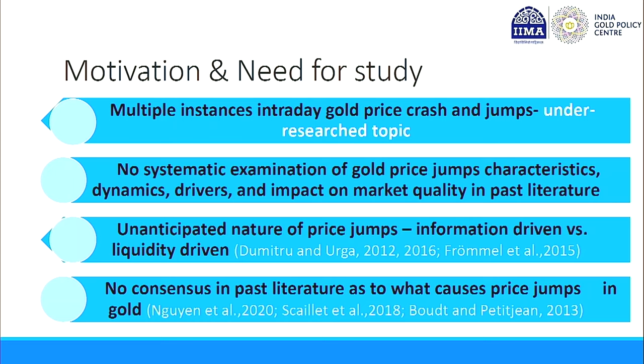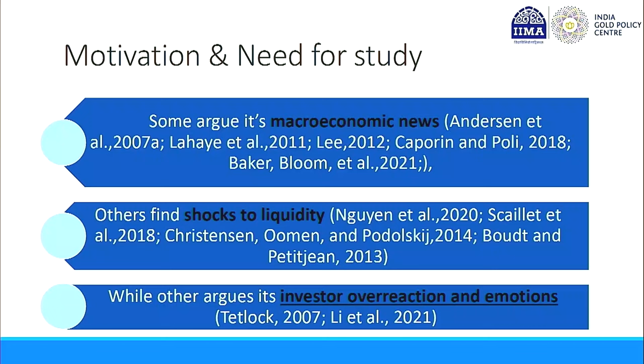There were multiple instances of gold price jumps but they were under-researched. There was no systematic evidence as to how many jumps happen in gold, at what frequency, which year or hour of the day has maximum jumps in gold futures or ETFs. Some literature says jumps are information-driven while others say they are purely driven by liquidity, leading to no consensus. The literature splits into three: macroeconomic news, liquidity shocks, and a behavioral finance perspective where overreaction of investors to news causes jumps.